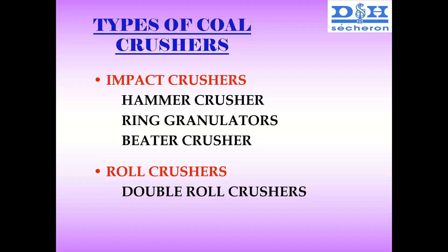In ring granulators, there are rings on two rollers. Both rollers run at simultaneous speeds. Coal is put inside, and the coal is crushed and reduced in size.